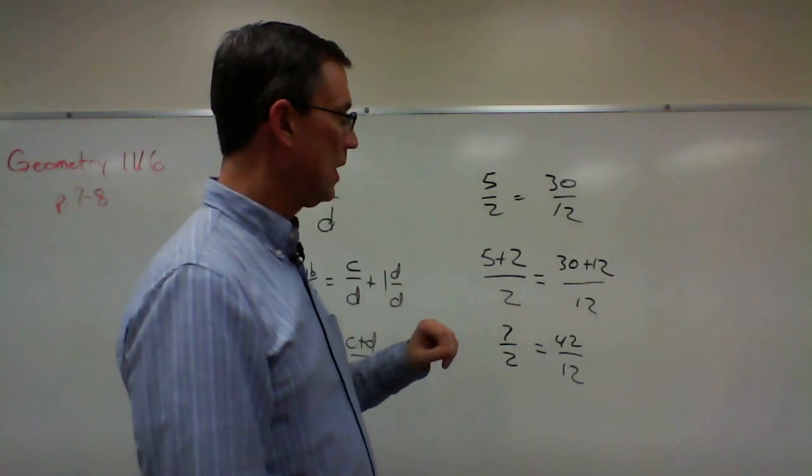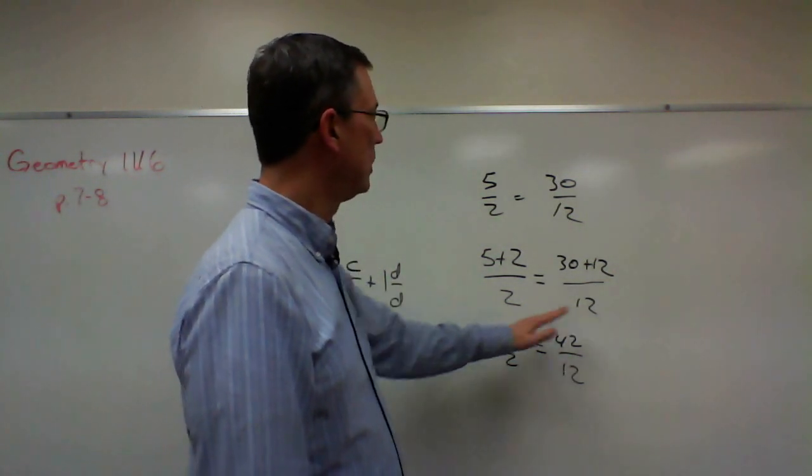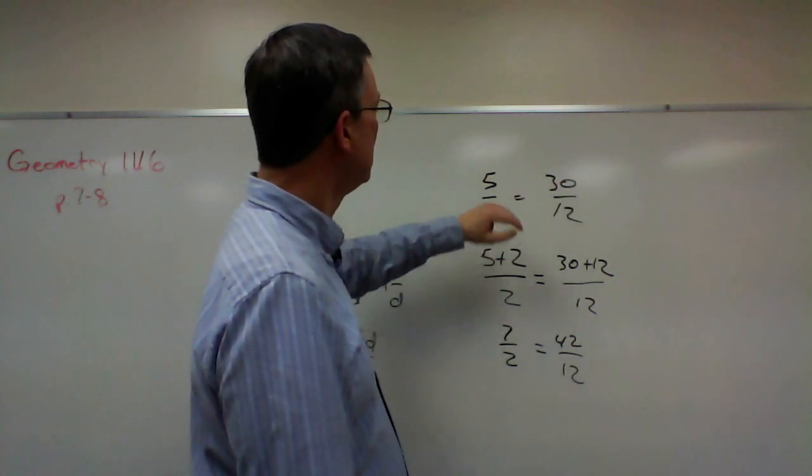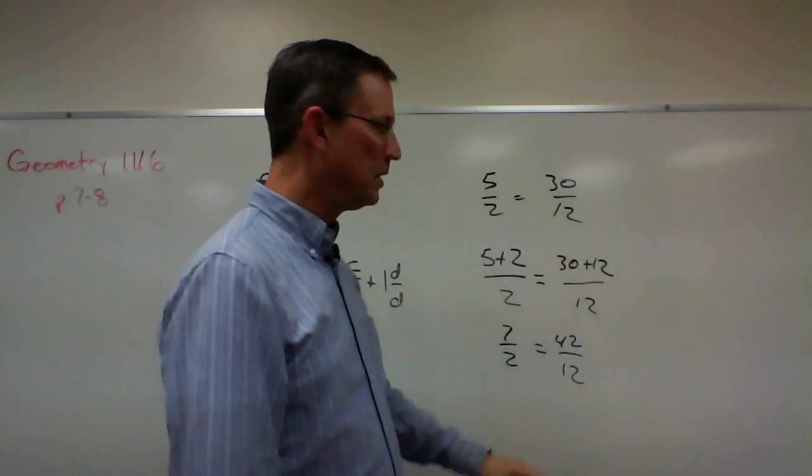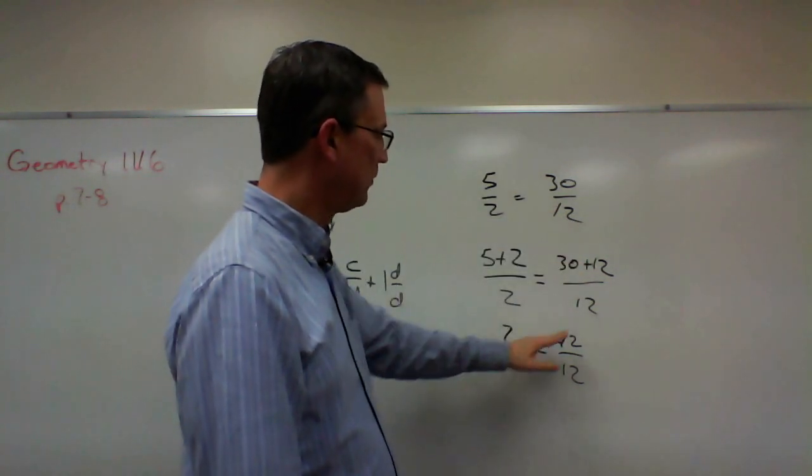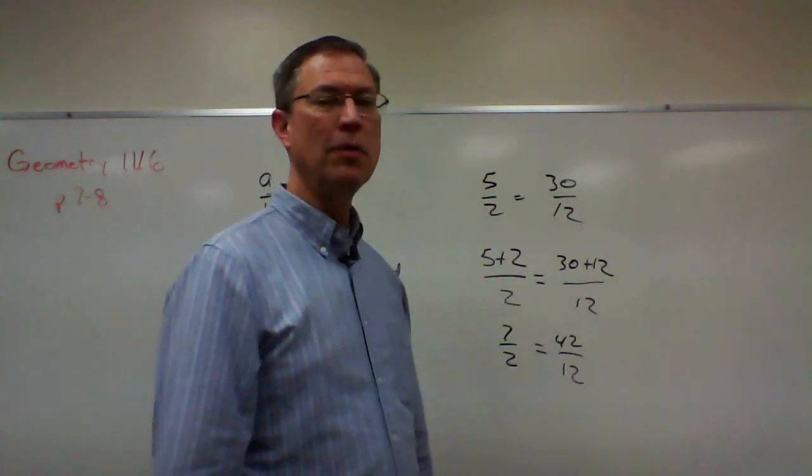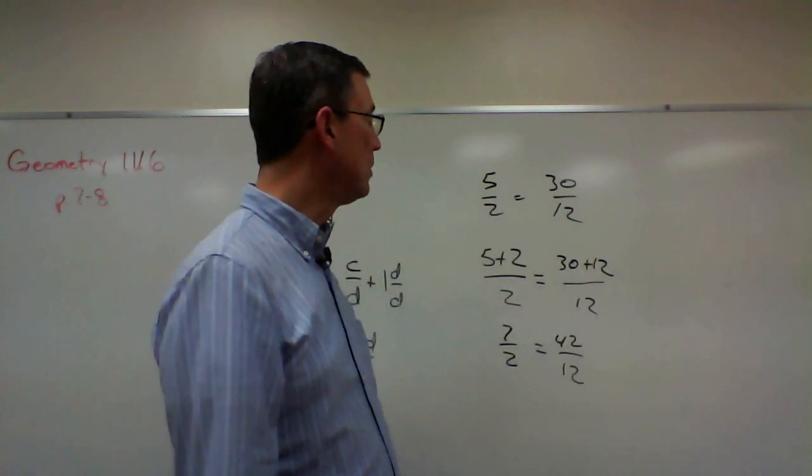Now, if this worked, if I did it correctly, we should be able to do the cross products. So 2 times 30 is 60, 5 times 12 is 60. Let's see if this still works down here. What's 2 times 42? 84. What's 7 times 12? 84. So the cross products are still equal.